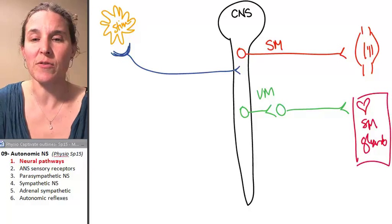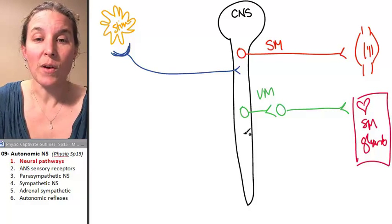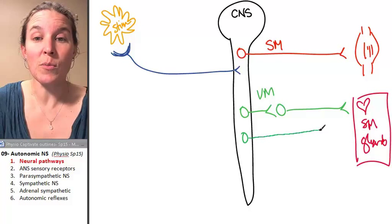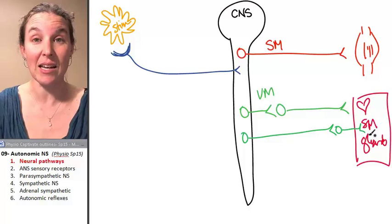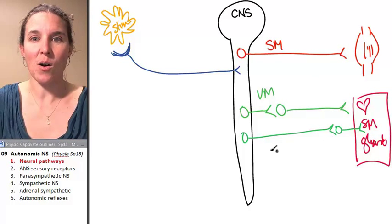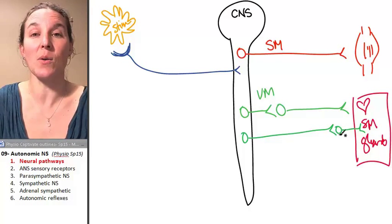And these are the details that we're going to flesh out today. We have two branches of the visceral motor nervous system, sympathetic and parasympathetic, and we're going to look at details like what's exactly going on here.